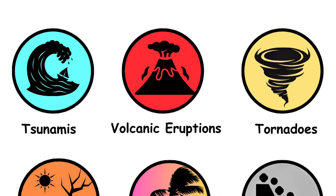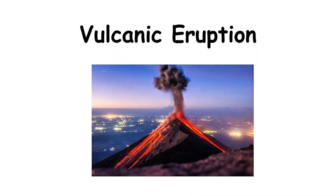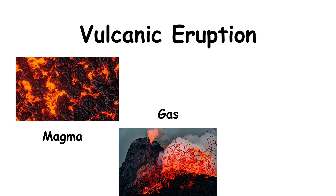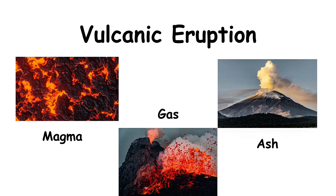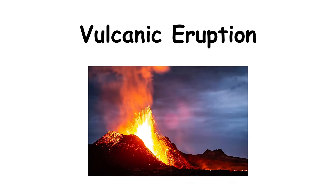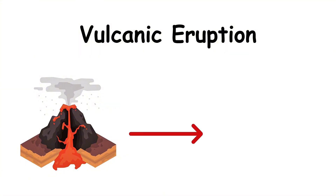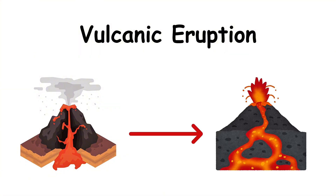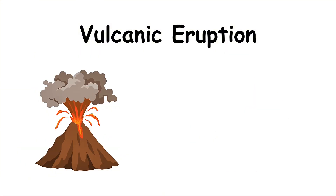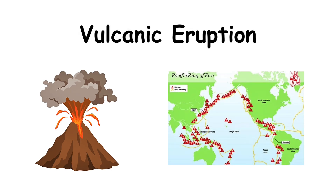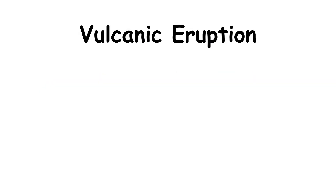Volcanic eruptions. A volcanic eruption happens when magma, gas, and ash escape from inside the Earth through a volcano. This occurs because high pressure builds up underground, forcing molten rock to rise until it bursts out at the surface. Most volcanoes are located along tectonic plate boundaries, especially in the Pacific Ring of Fire, home to about 75 percent of the world's active volcanoes.